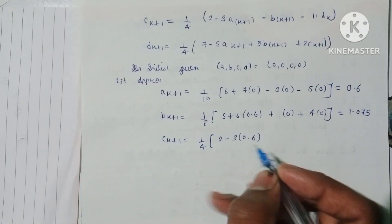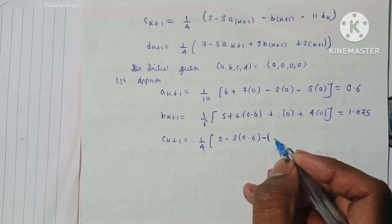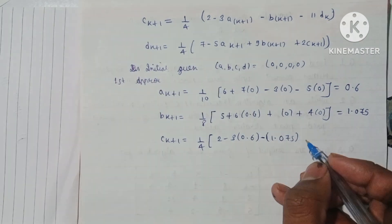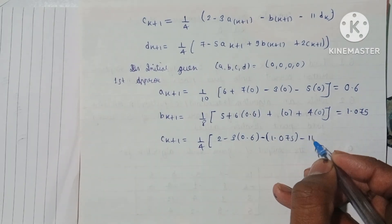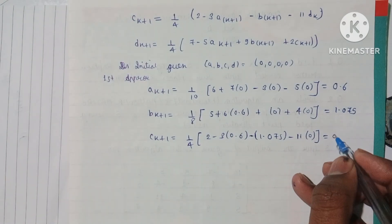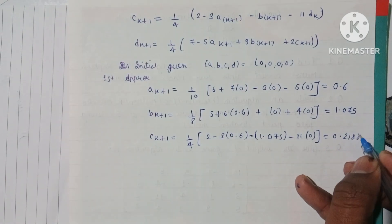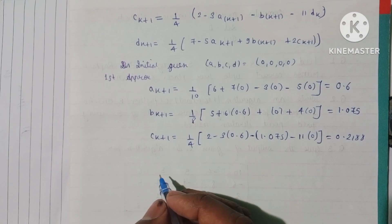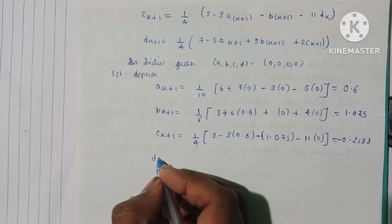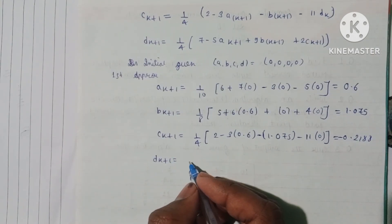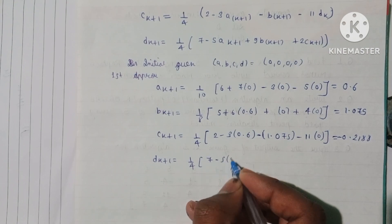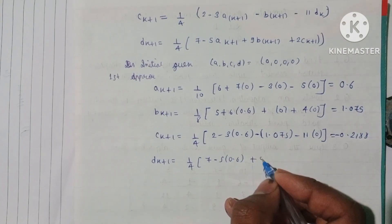Now C(k+1) equals 1/4 times (2 - 3 times current value of A which is 0.6, minus B current value of 1.075, minus D current value of 0), which equals -0.2188. Then D(k+1) equals 1/4 times (7 - 5 times 0.6 + 9 times 1.075 + 2 times -0.2188), which equals 3.3094.